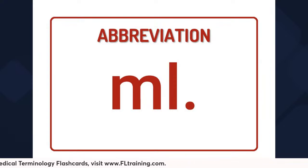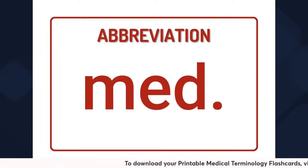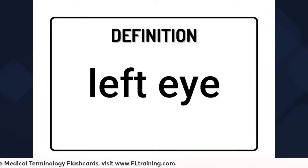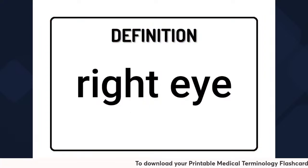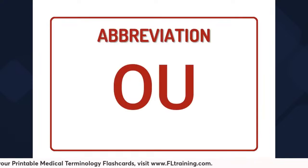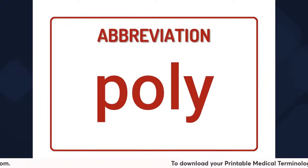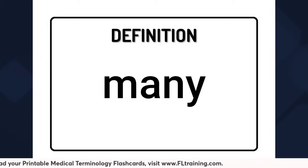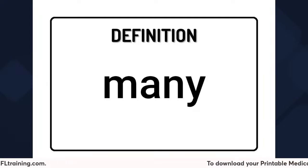M-E-D is short for medication. O-S is short for left eye. O-D means right eye. O-U means both eyes. Poly is a prefix that means many — so if a person has polyuria, that means they have increased urination frequency, letting out more urine than normal.